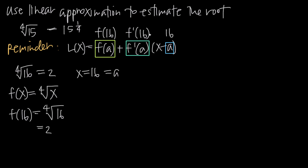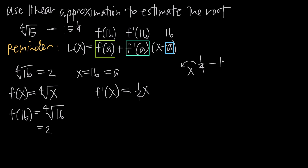Now we need to find f'. First we find the derivative. We rewrite the fourth root of x as x to the one-fourth power, then apply the power rule: bring the one-fourth down in front and subtract one from the exponent. One-fourth minus one equals one-fourth minus four-fourths, which gives us negative three-fourths. To simplify, we move x to the negative three-fourths to the denominator, giving us f'(x) = 1 over 4x to the three-fourths.